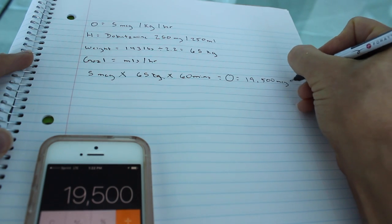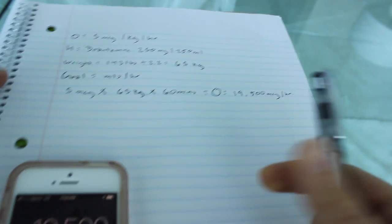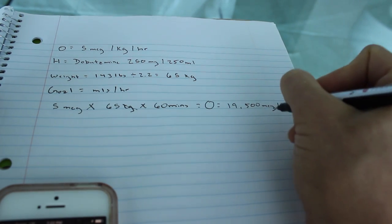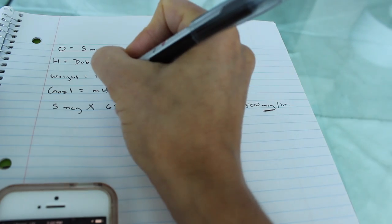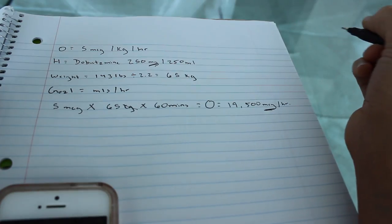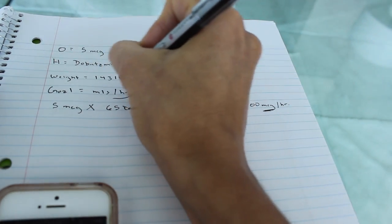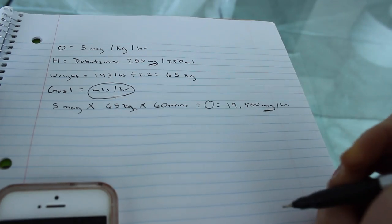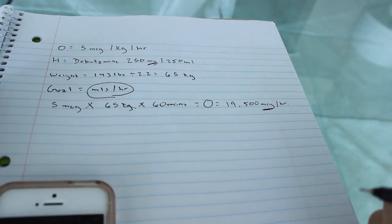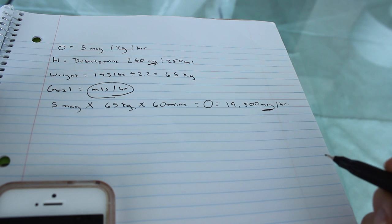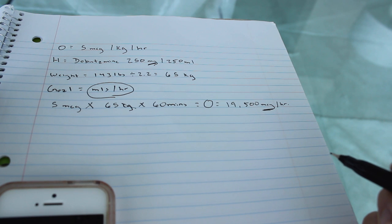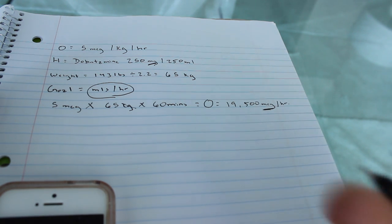And then we're going to say per hour. Now we have a little issue, because this is in micrograms, but what do we need? We need milligrams. And actually, our ultimate goal is mLs per hour. So we're going to have to do some dimensional analysis. With dimensional analysis, it's kind of a cool way to calculate. There's many ways to get to the ultimate answer. I'm going to put a link to a video below that explains dimensional analysis. But this is how I do it.